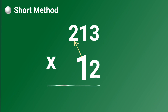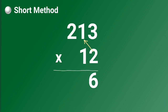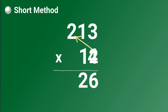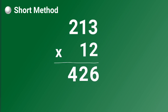Let me show you how. Two times three equals six. Two times one is two. And two times two is four. Ones place done. Let's continue with the tens place.